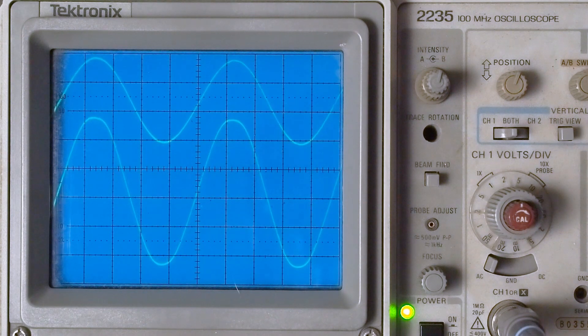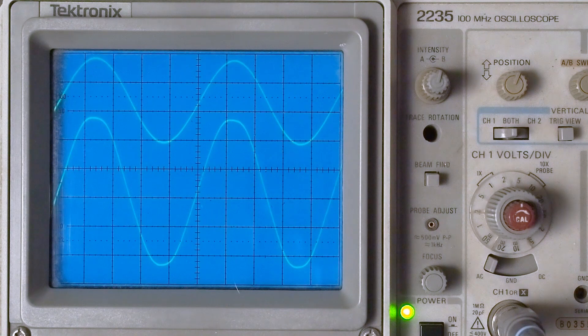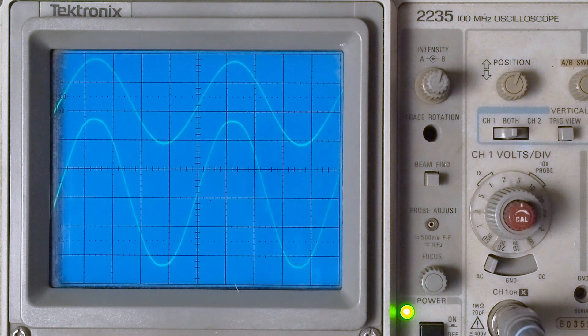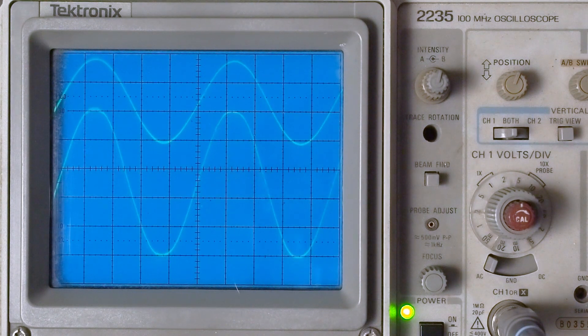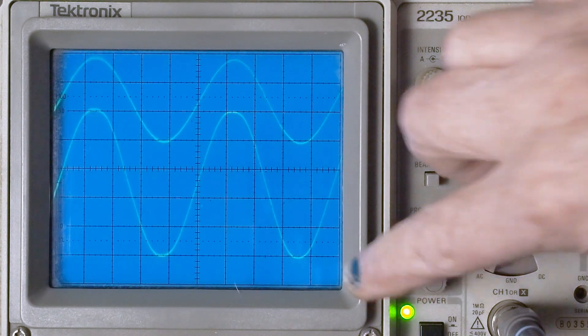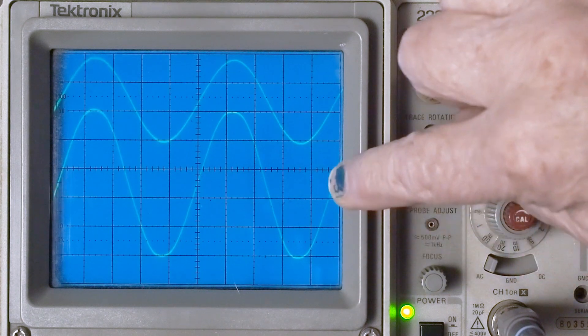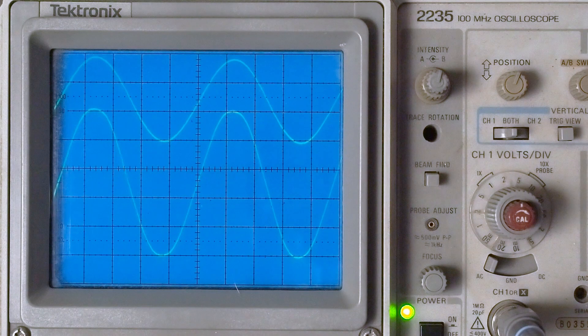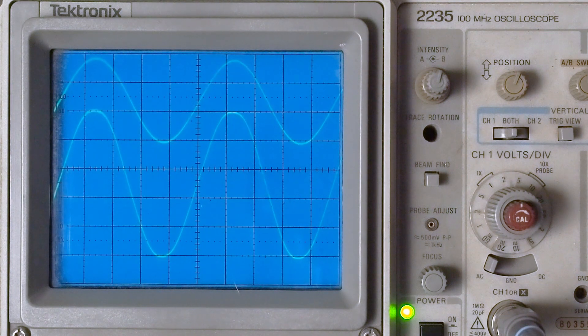That's looking pretty good. There's a little touch of clipping there. We're on the 5 volt scale over here. So we go 5, 10, 15, 20, 25 volts peak to peak on the output into an 8 ohm load at 200 hertz.